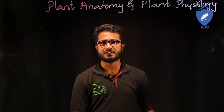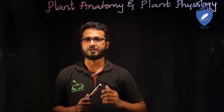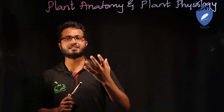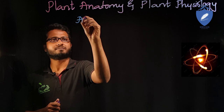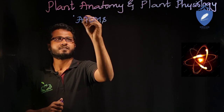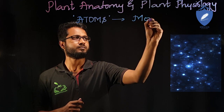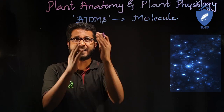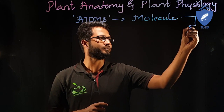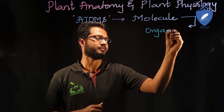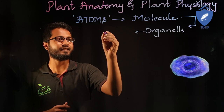Now let us first talk about plant anatomy — what exactly are the characteristic features we observe in this particular part. We'll start by talking about how the origination of this science occurred. It is obvious that there are many atoms in nature. These atoms combine together to form molecules. Many molecules then combine together to form cell organelles.